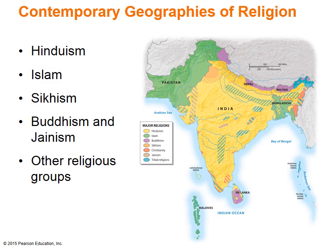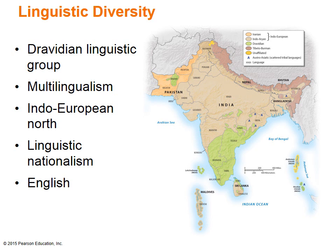Other religious groups include Christianity and tribal religions, but they are very scant in this region. A major linguistic divide separates the Indo-European languages of the north from the Dravidian languages of the south. The Dravidian language family is unique to South Asia. In the Himalayan areas, most languages belong to the Tibetan-Burman family. Of the Indo-European languages, Hindi is the most widely spoken with some 480 million speakers, making it the second most widely spoken language in the world. Most other major languages are closely associated with states in India, and multilingualism is very common in this region.